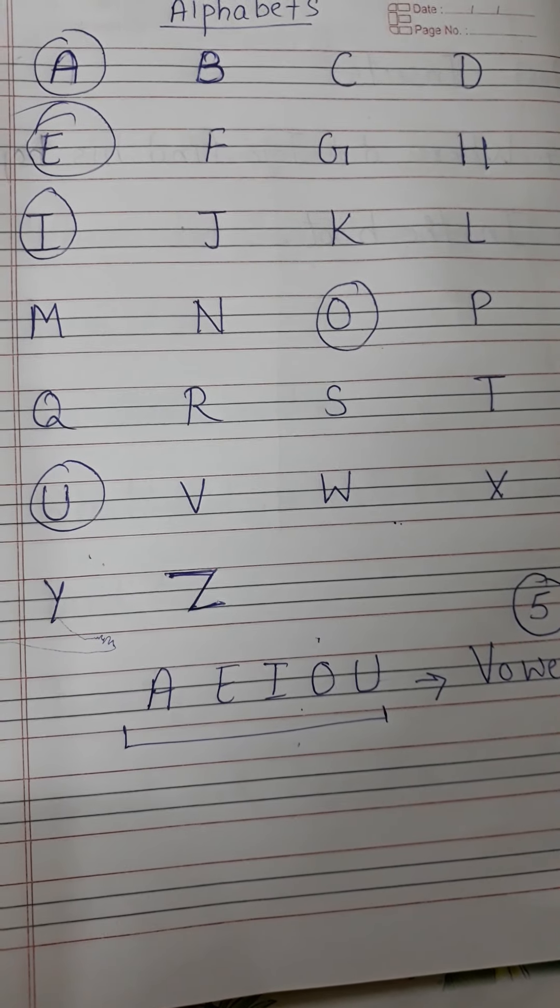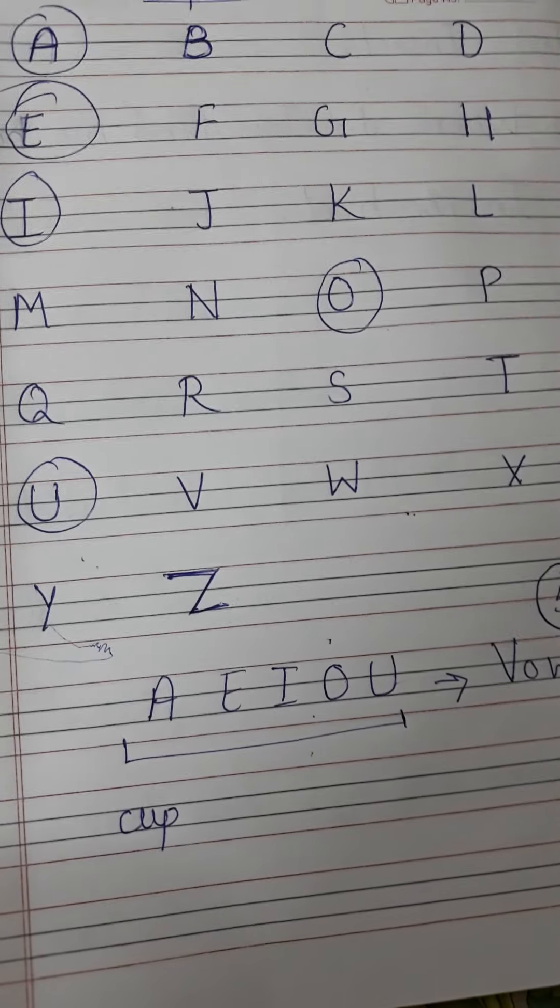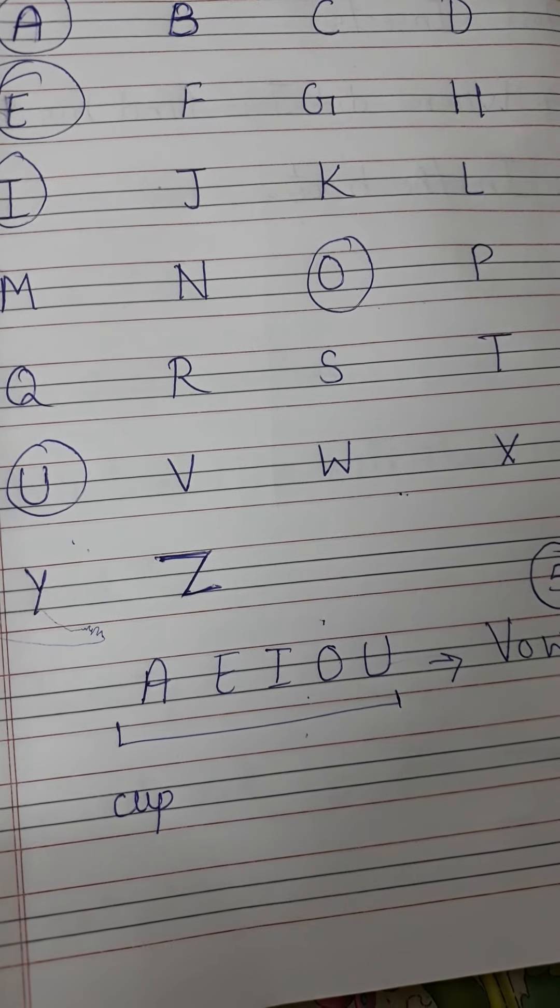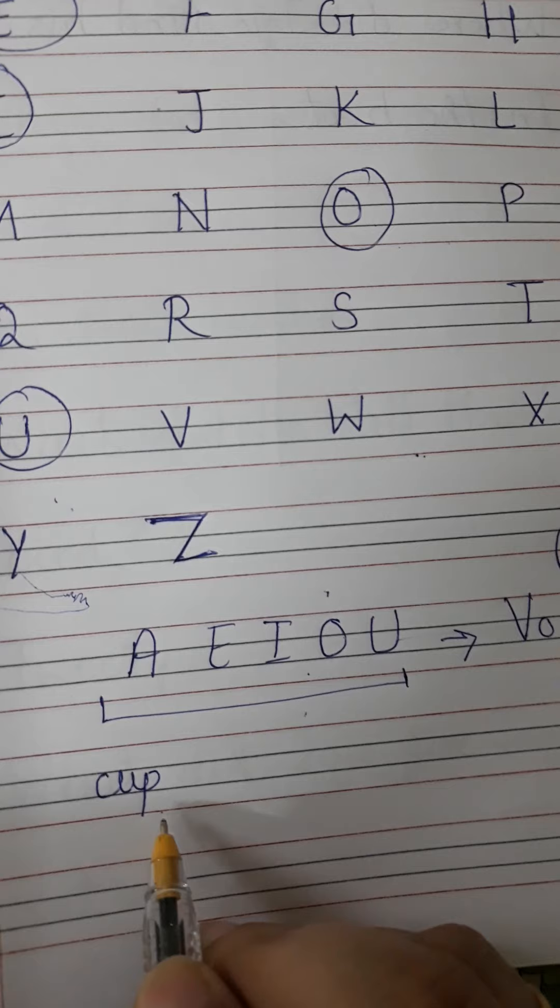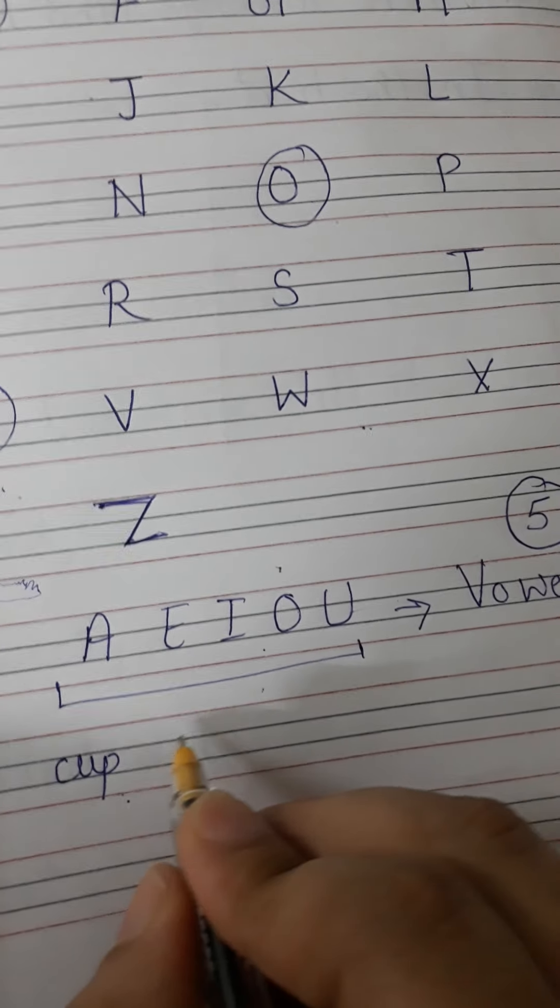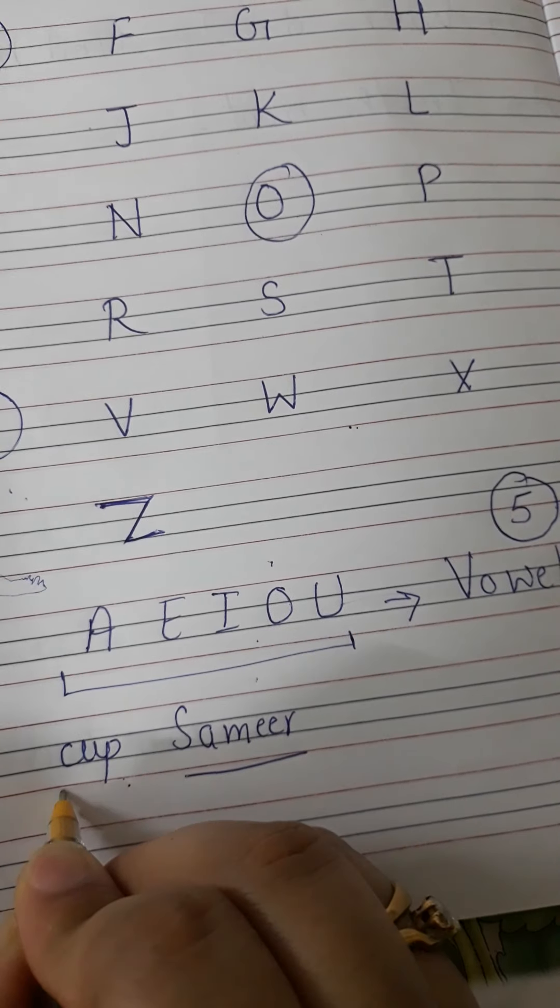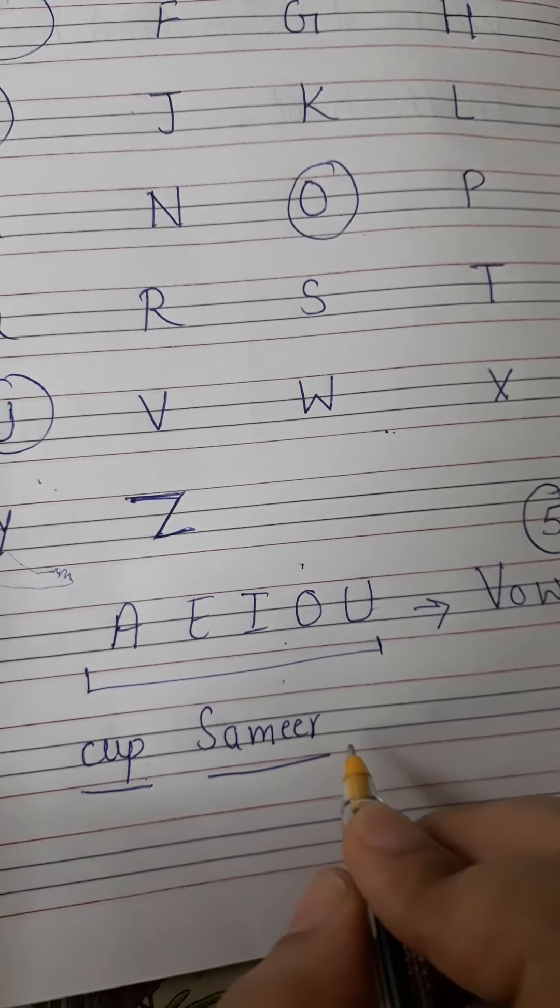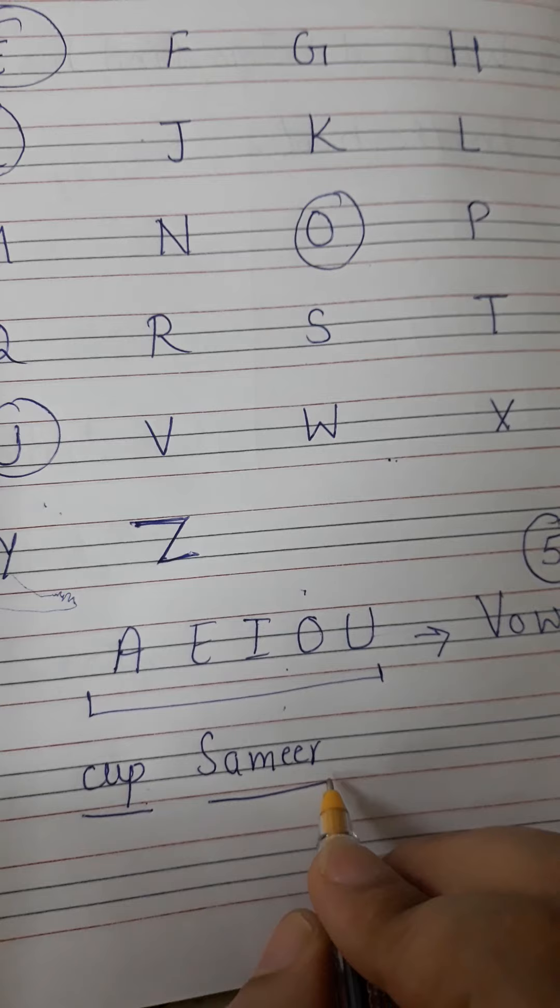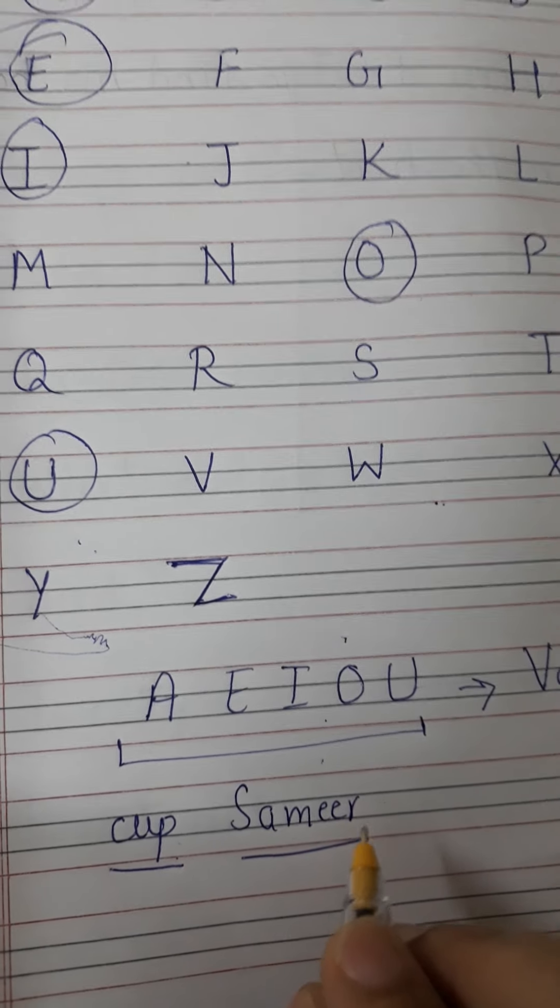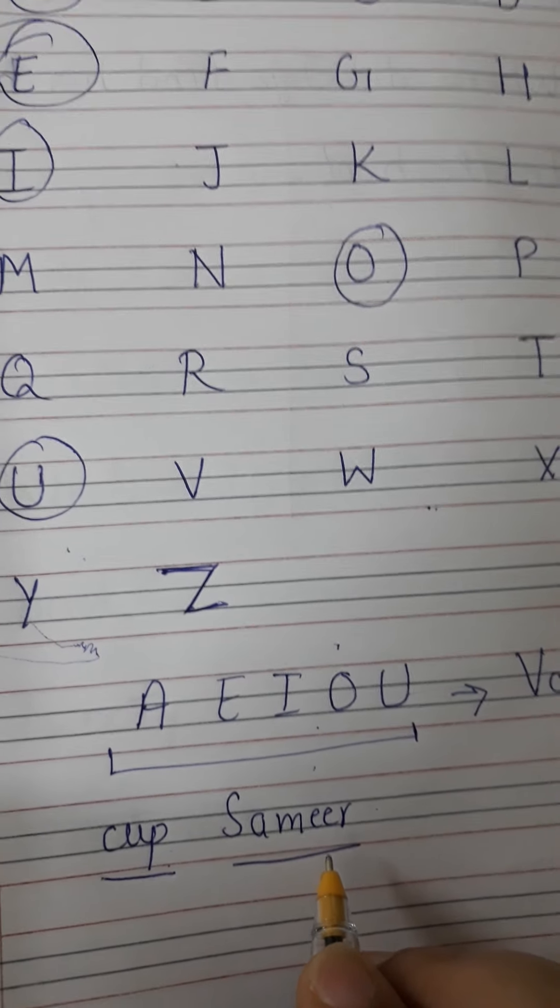Now I want to ask you one thing. If I write a word like C, U, P. Cup. What do you know about this word? Cup. Or if I say Sameer. Sameer is a name. Cup is a thing. So what do you think these words are? Yes, you are right. These words are nouns. They are called nouns. The name of a place, animal, a thing or a person are called nouns.